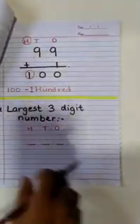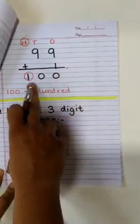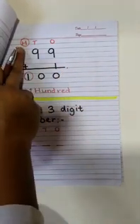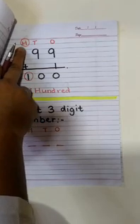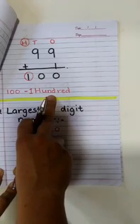Now what happens when we add 1 to 99? We get 100 and a new column of H which is hundreds. The spelling of 100 I hope you remember.